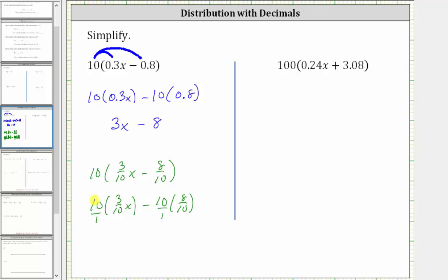10 divided by 10 simplifies to one in the numerator and the denominator, leaving us with one times 3x, which is 3x.